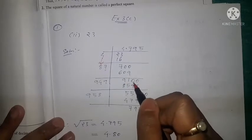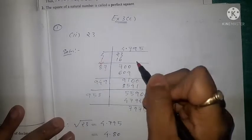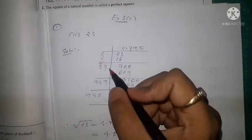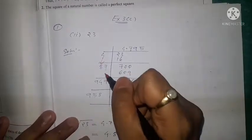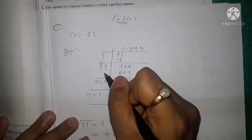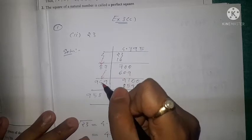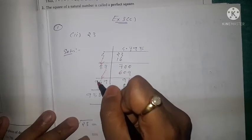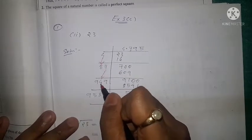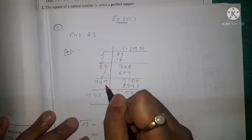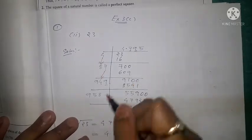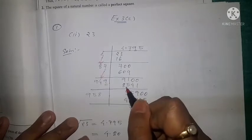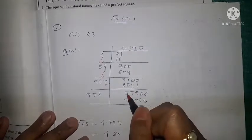Again we take two zeros, so it becomes 9100. This 7 is doubled to 14; the 1 is carried, so 1 + 8 = 9, giving us 94. Whatever number we multiply here, the same number we write here: 949 × 9 = 8541, and the remainder is 559.